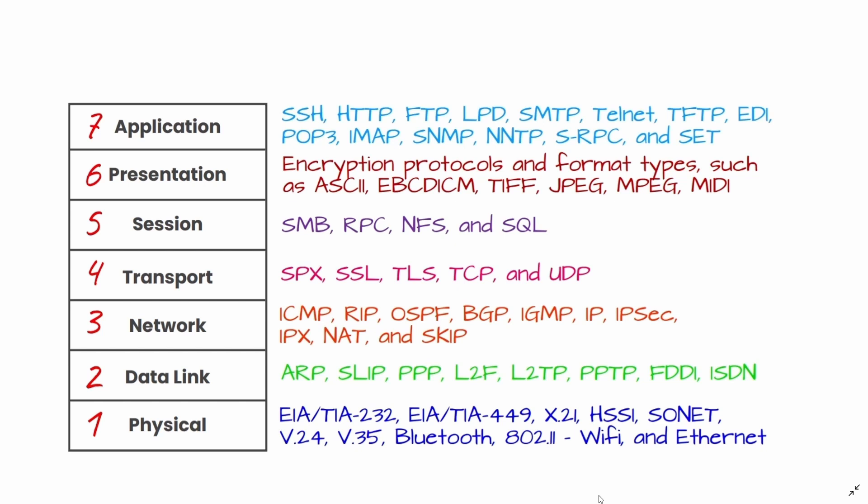The seventh layer is the application layer. At this layer, both the end user and the application layer interact directly with the software application. This layer sees network services provided to end user applications such as web browsers or Office 365. The application layer identifies communication partners, resource availability, and synchronizes communication.